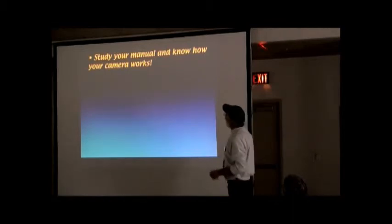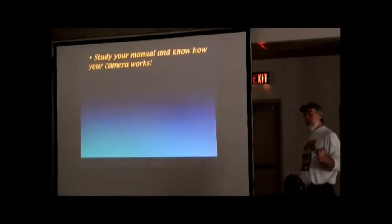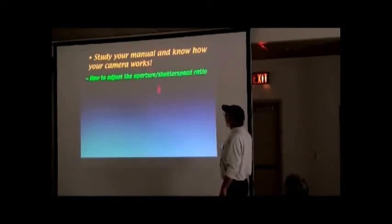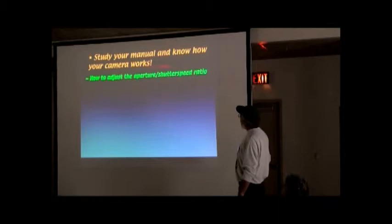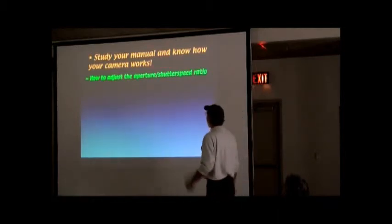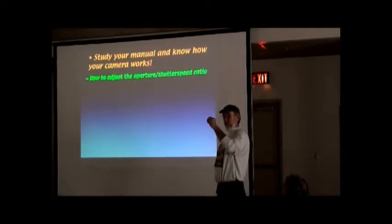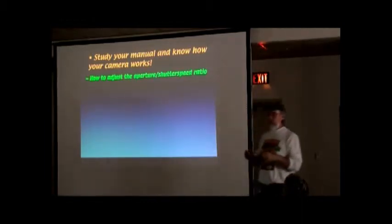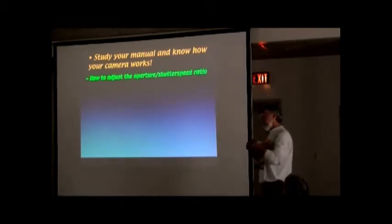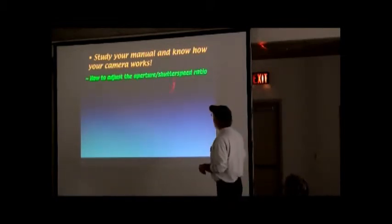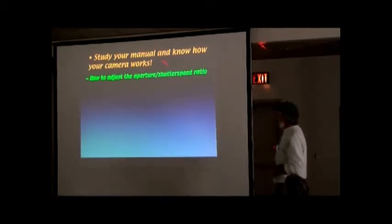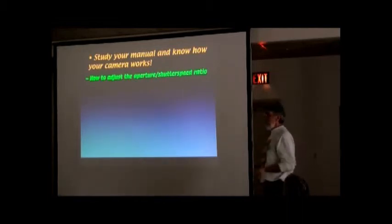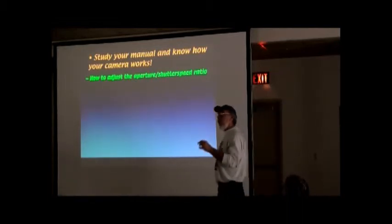All right, so study your manual and know how your camera works. You don't have to read the whole thing. I'm going to tell you what you need to know. How to adjust the aperture and shutter speed ratio. Holy crap, what's that? You know? Lens opens, it lets light in, and the shutter speed stays open for a given amount of time. Shutter speed and opening, that's how it lets light in, right? We'll talk more about that in detail, but you need to know how to change those two in relation to each other. All your cameras will allow you to do it.